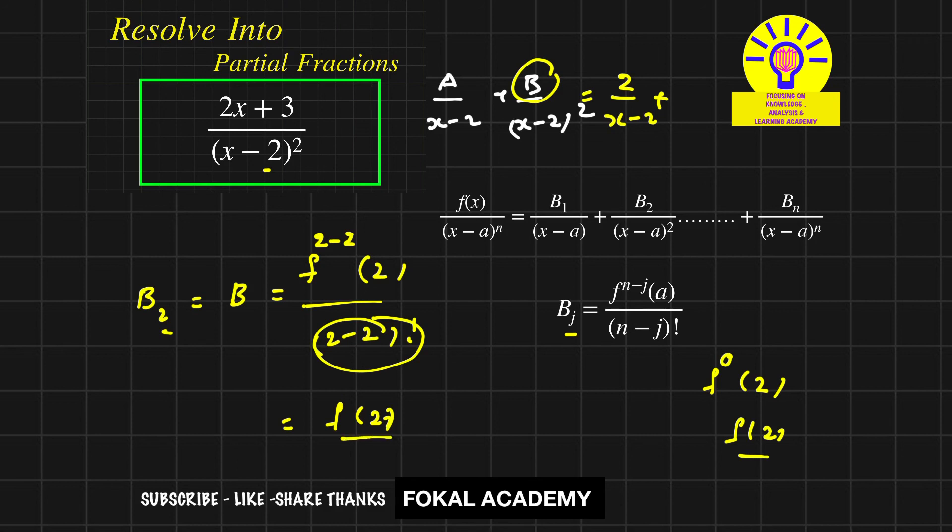Substitute in f(x): f(2) equals 2(2) + 3, which equals 7. So B is the second constant value, equal to 7. Therefore 7/(x - 2)². This is the required partial fractions for the given problem. Thanks for watching, please subscribe to my channel and don't forget to hit like. Thank you.